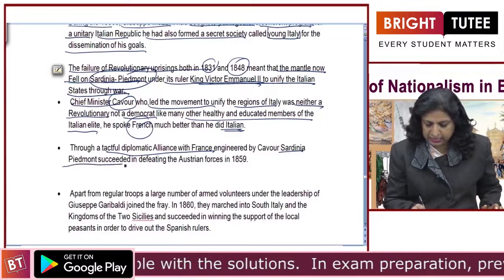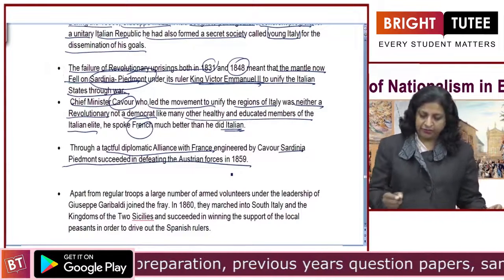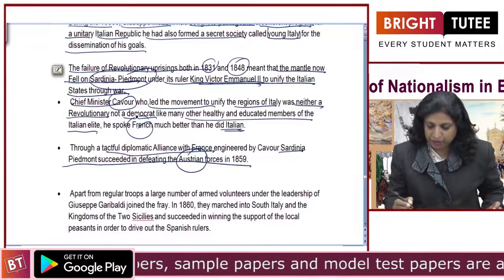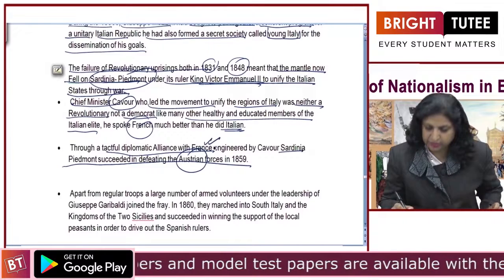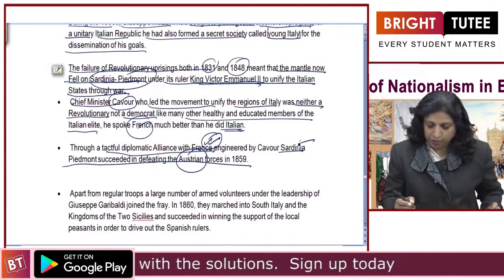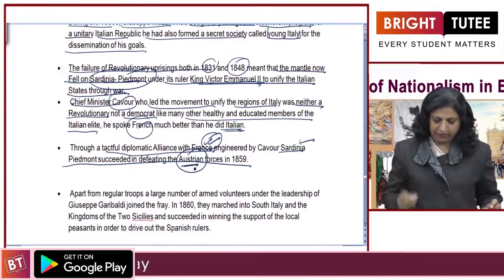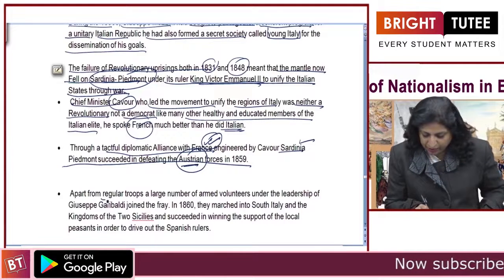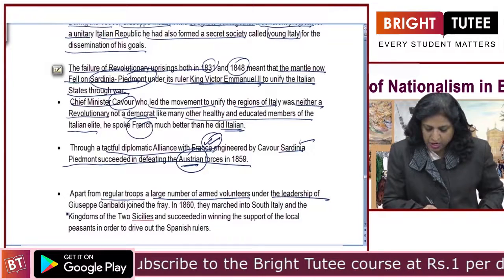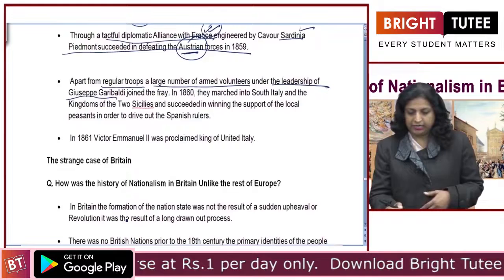Sardinia-Piedmont succeeded in defeating the Austrian forces in 1859. Cavour was able to get support from France, and with that alliance, Sardinia-Piedmont defeated the Austrian forces in 1859. Apart from regular troops, a large number of armed volunteers under the leadership of Giuseppe Garibaldi joined the fray, joined this entire movement.